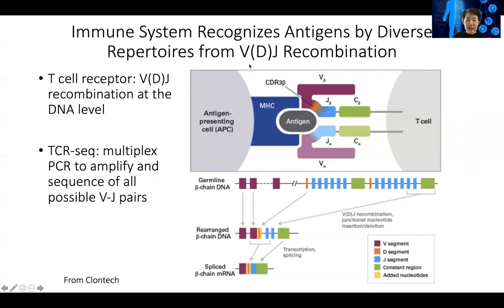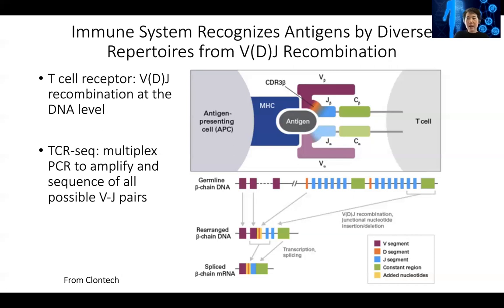This is through a process called VDJ recombination. Basically, in any multicellular species with T cells, you will see this situation. In the T cells, there is a region of the genome which codes for a T cell receptor. It's a gene fragment, which means it's not like a normal gene — it's a fragment. And in here, there are many V fragments.